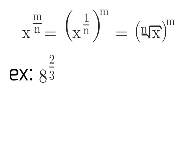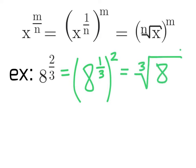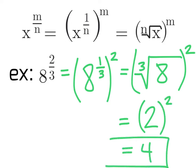Let's look at an example: 8 to the power of 2/3. We'll first split up the fractional exponent into 8 to the power of 1/3, all squared. We can rewrite that as the third root of 8, squared. The third root of 8 is 2, so 2 squared gives us a final answer of 4.